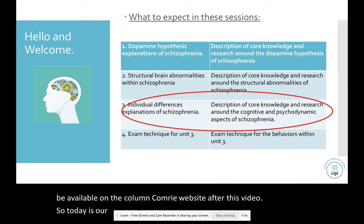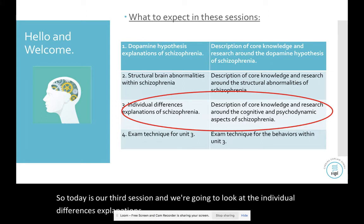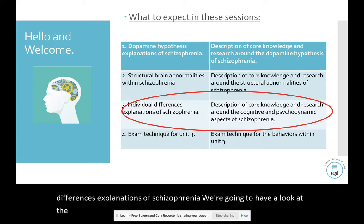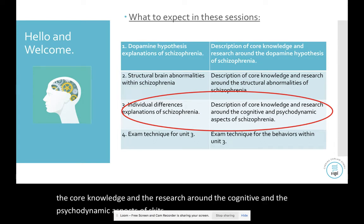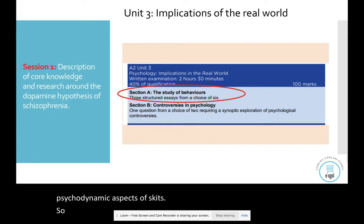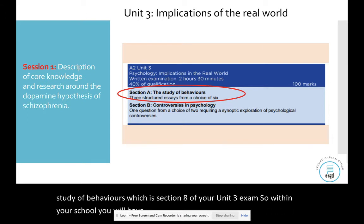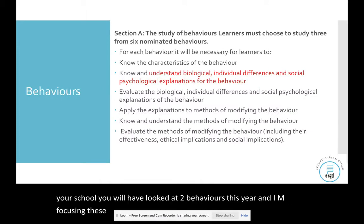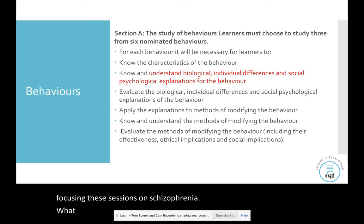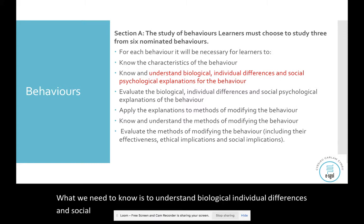Today is our third session and we're going to look at the individual differences explanations of schizophrenia. We're going to have a look at the core knowledge and the research around the cognitive and the psychodynamic aspects. This session looks at the study of behaviours, which is section A of your unit 3 exam, and within your school you will have looked at two behaviours this year. We need to understand biological, individual differences, and social psychological explanations for the behaviour.